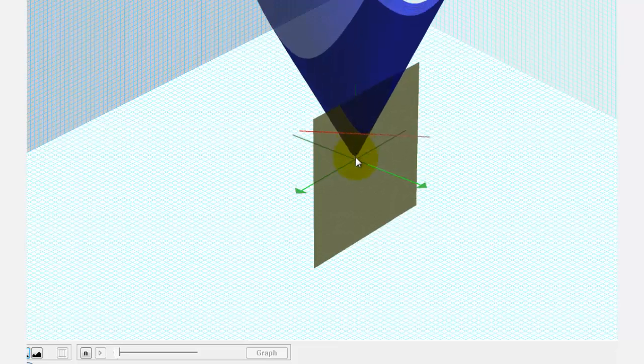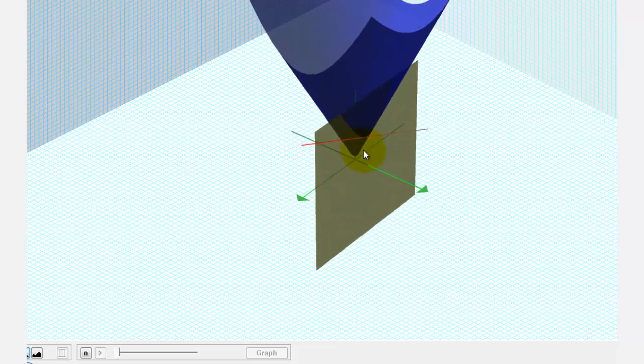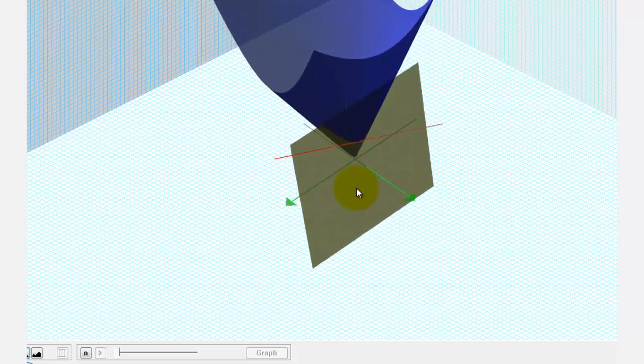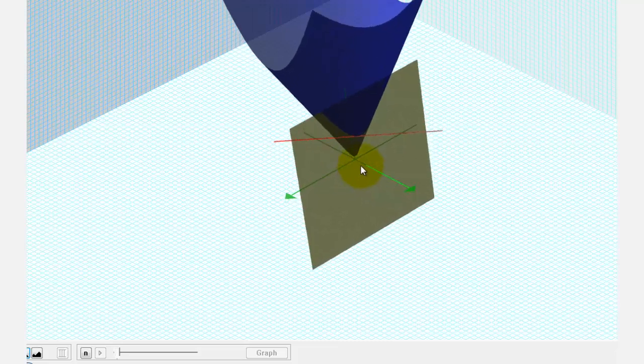So notice, as we go out along the positive x axis, this line is going uphill and therefore we expect the value of our partial derivative to be positive.